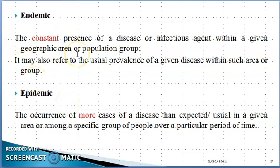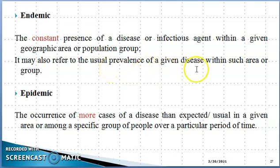Endemic is the constant presence of a disease or infectious agent within a given geographic area or population group. It may refer to the usual prevalence of a given disease within such area and group. Endemic means that a specific disease is present in one specific area or geographic area at a constant expected level.